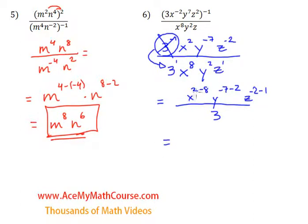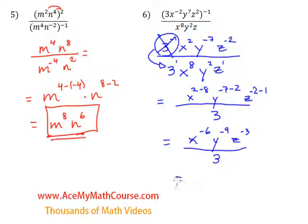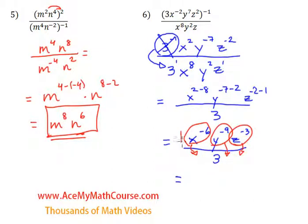X to the power of 2 minus 8 is negative 6, so x to the power of negative 6. Negative 7 minus 2 is negative 9. And negative 2 minus 1 is negative 3. All over 3. Of course we want to make the exponents positive, so I can bring down all these elements, thereby making the exponents positive, and we're just left with 1 in the numerator. So we have 1 over 3 times x to the power of 6, y to the 9, z cubed. And that is the final answer.